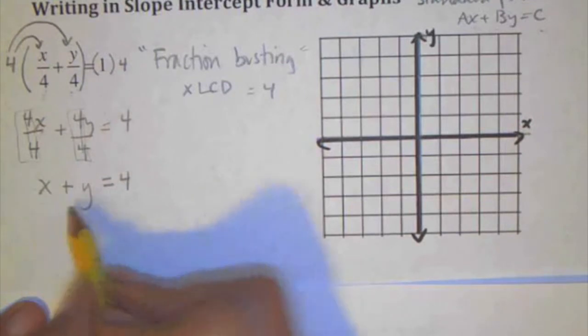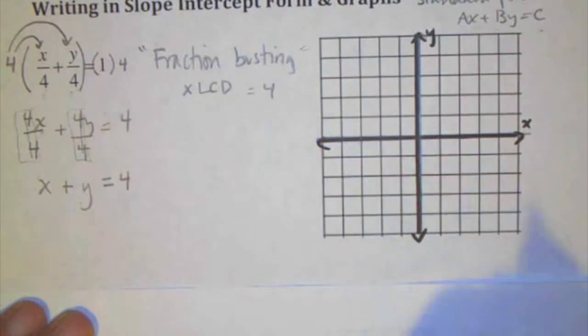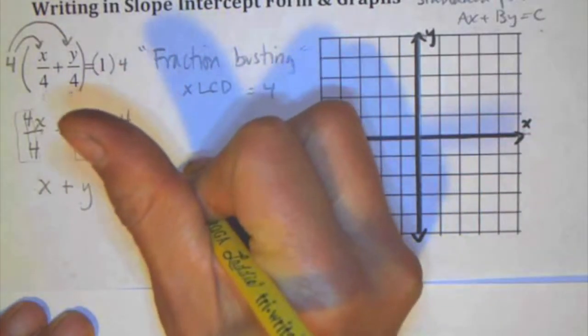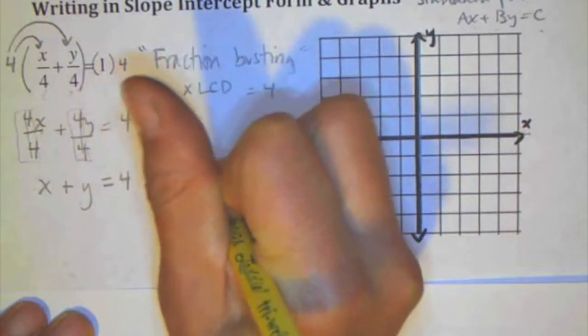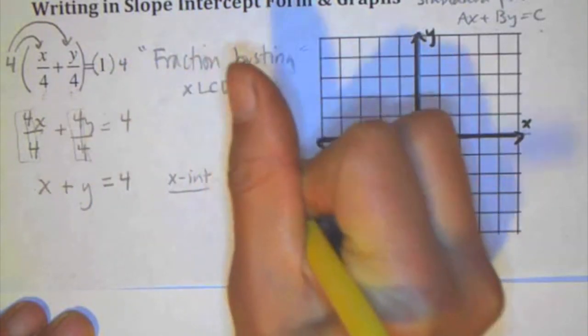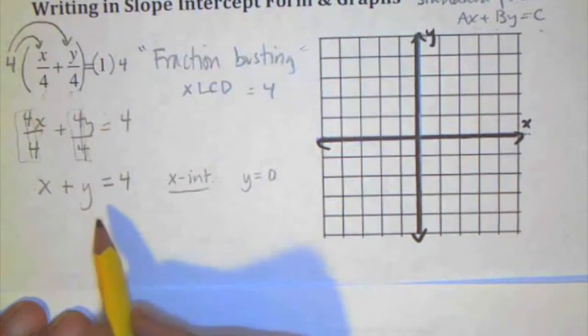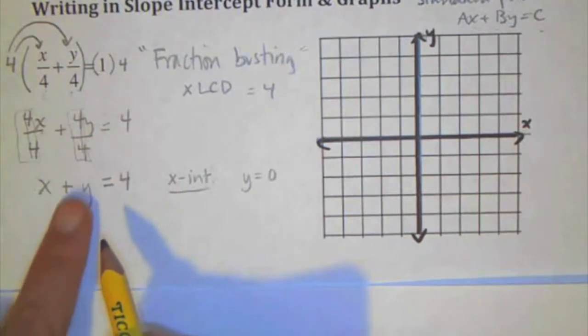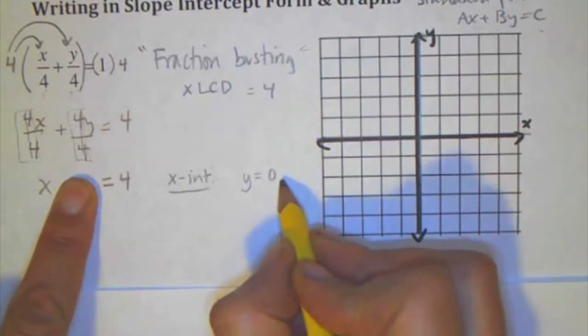Now at this point, if I wanted to find the x and y intercepts and just graph, to find the x intercept, the way that you do that is you set y equal to 0. So I can use kind of a cover-up method to do that. If I set y equal to 0, basically what happens is that x is just equal to 4.